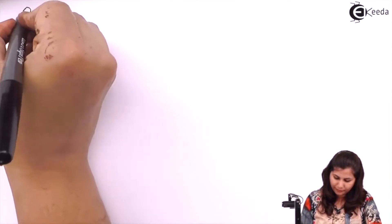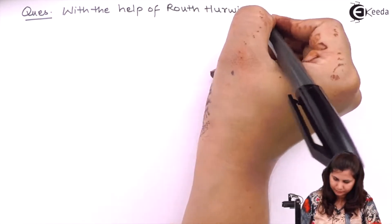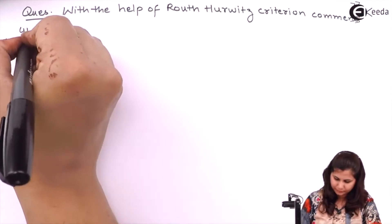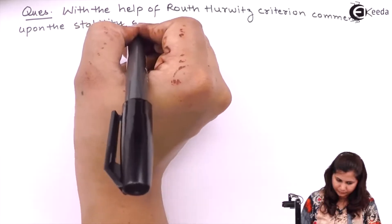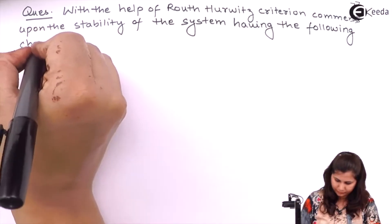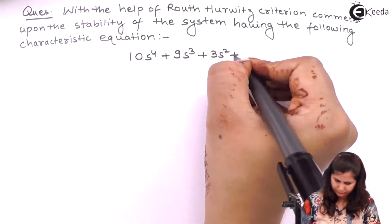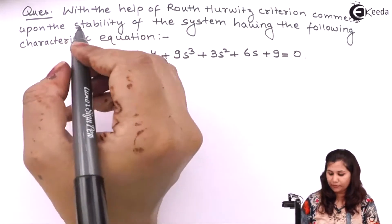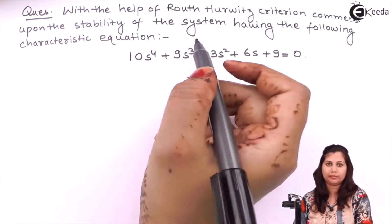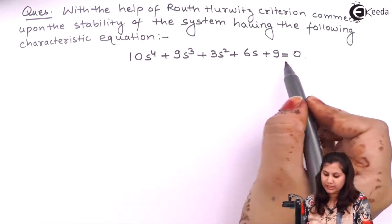Hello friends. In this video we are going to solve a problem on the Routh-Hurwitz criteria. Our problem is: with the help of Routh-Hurwitz criteria, we have to comment upon the stability of the system — that is whether the system is stable or unstable — having the following characteristic equation. This is the characteristic equation of the system.